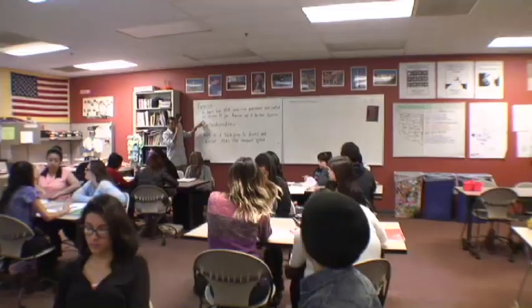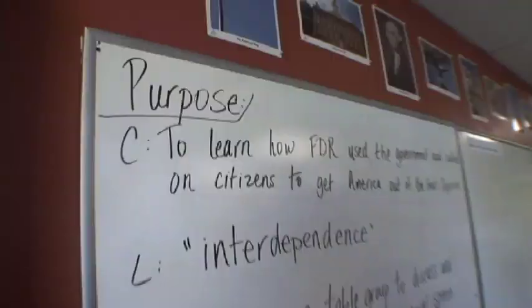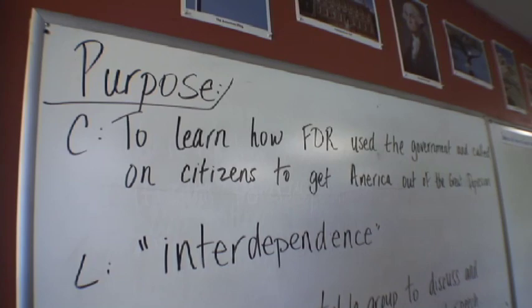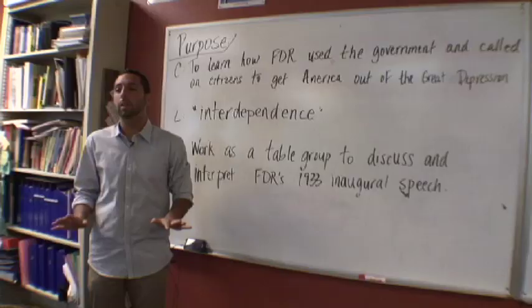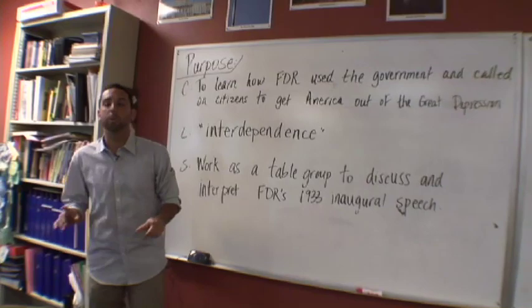Looking back at the purpose, the close reading showed FDR specified what the government can do, and then asked what citizens' role is. The lesson also touched a lot on interdependence. Tomorrow the class will look more specifically at what FDR did with his government programs to help get America out of the Great Depression. Good job, second period.